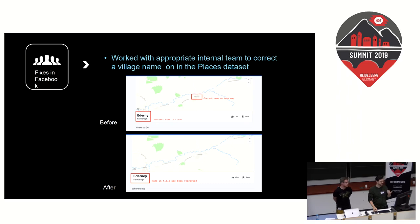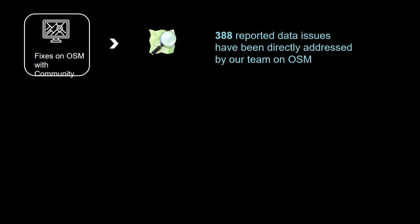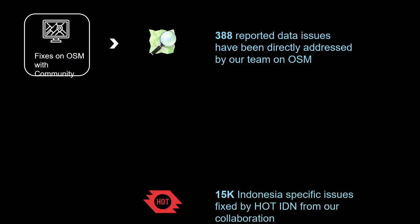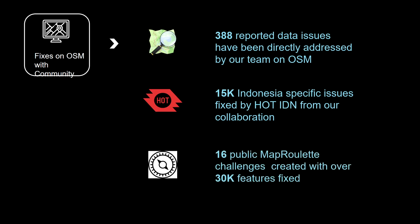Here's an example where the fix was on the Facebook Places page — the OSM base map data is correct, but the Facebook product surface was incorrect, so we worked with the internal team to get that fixed. In terms of OSM fixes, we've had almost 400 reported issues our team has gone back and fixed directly in the database. We've also collaborated with HOT Indonesia to fix about 15,000 various specific issues like names and certain tags in Indonesia, and filed 16 MapRoulette challenges with tens of thousands of features fixed as a result.